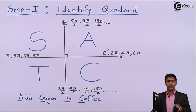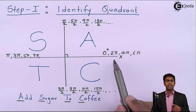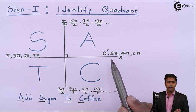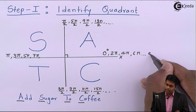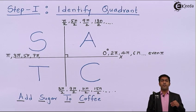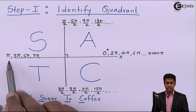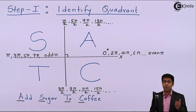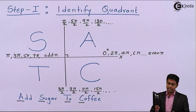Let's observe carefully. On the positive direction of the x-axis, we get angles that are even multiples of π — so 0, 2π, 4π, 6π. If I ask where 40π lies, it will be at the positive x-axis. On the negative direction of the x-axis, we get odd multiples of π. So if I ask where 53π lies, it will be at the negative x-axis.